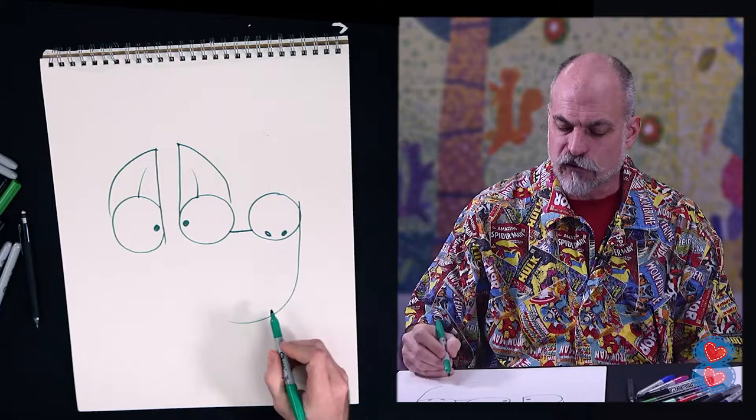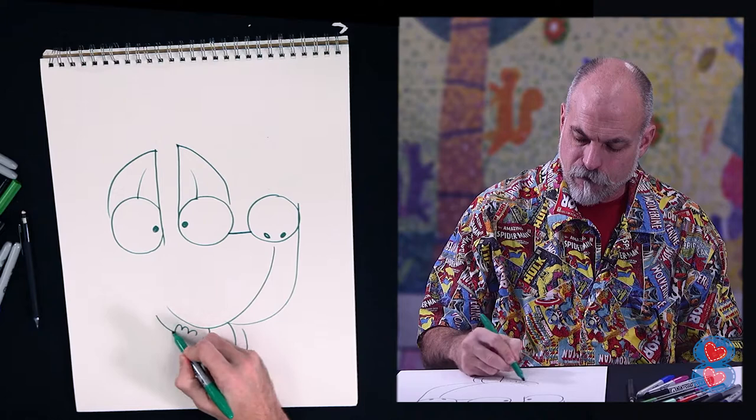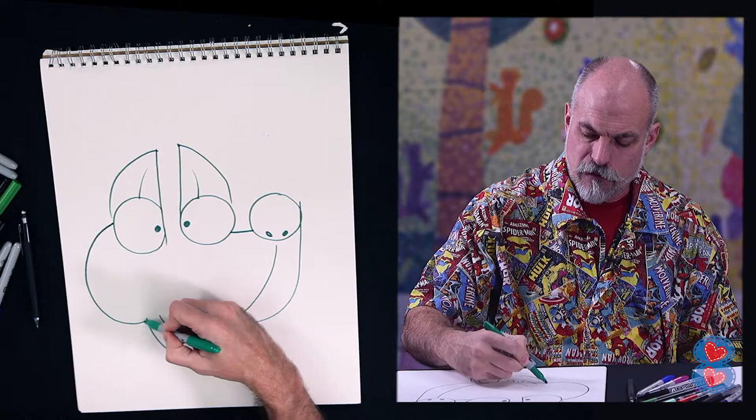We'll connect the dog's nose to the dog's eyes and we'll give it another G swoopy part and that becomes the front of the dog's nose. Then we'll put him a tongue, a couple of teeth and a chin and then we'll connect his ear to his chin with a jaw.